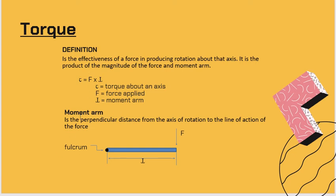The moment arm is the perpendicular distance from the axis of rotation to the line of action of the force. If you will notice, there is a fulcrum — that is our axis of rotation. So the moment arm is this distance from your given applied force based on the axis of rotation or the fulcrum.